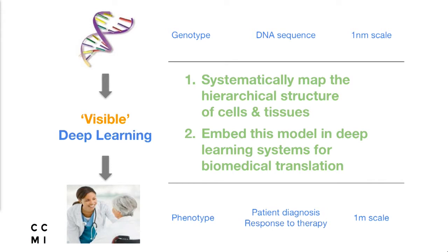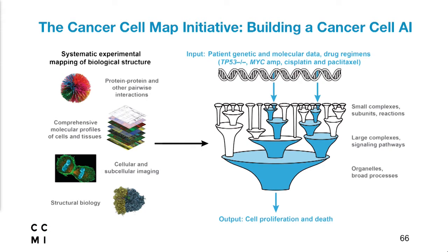Based on this powerful idea, rather than directly associating nanometer-scale events to meter-scale events, what we need to do is fill in the middle layers — just as you heard in Laszlo's talk. First, systematically map those networks, pathways, and all the structure and function needed to connect the nanometer scale to the meter scale. Then advance computer science to build not black-box machine learning models, but visible machine learning models that rest on top of exquisite hierarchies of biological systems. That's the general strategy behind our NCI grant — the Cancer Cell Map Initiative.